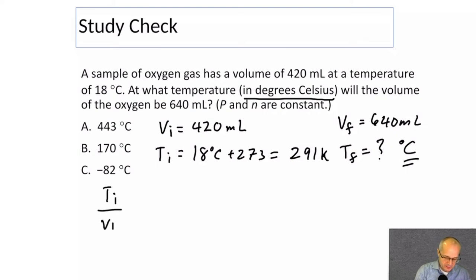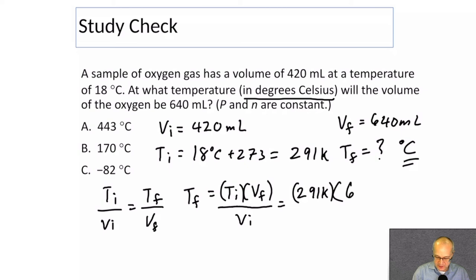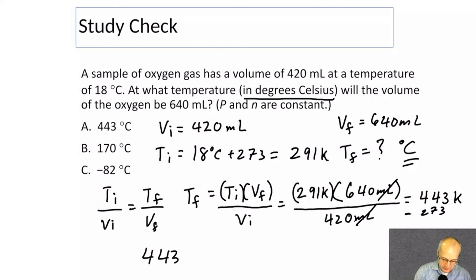Ti over Vi equals Tf over Vf. So Tf will be Ti times Vf over Vi. That's going to be the rearranged expression. Plug in some numbers. Ti is 291. Vf is 640 milliliters. All that will be divided now by Vi, which is 420 milliliters. Those units are canceling. With your handy-dandy calculator, punch in some numbers. 443 Kelvin minus 273, 170.